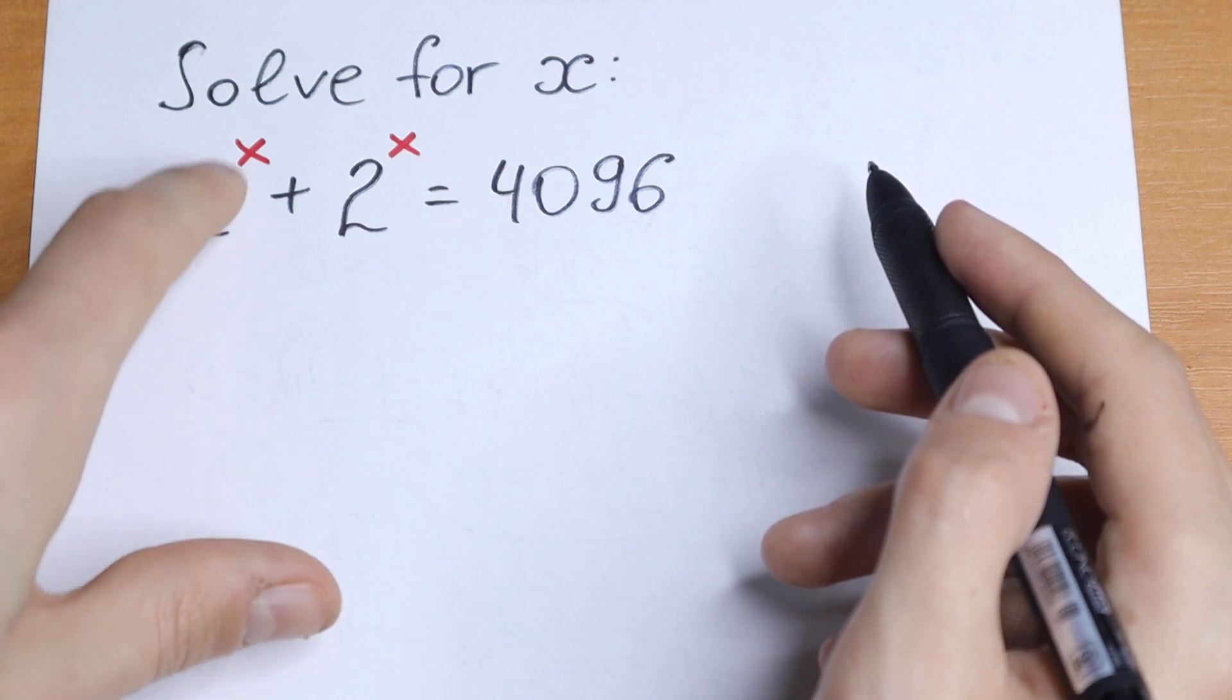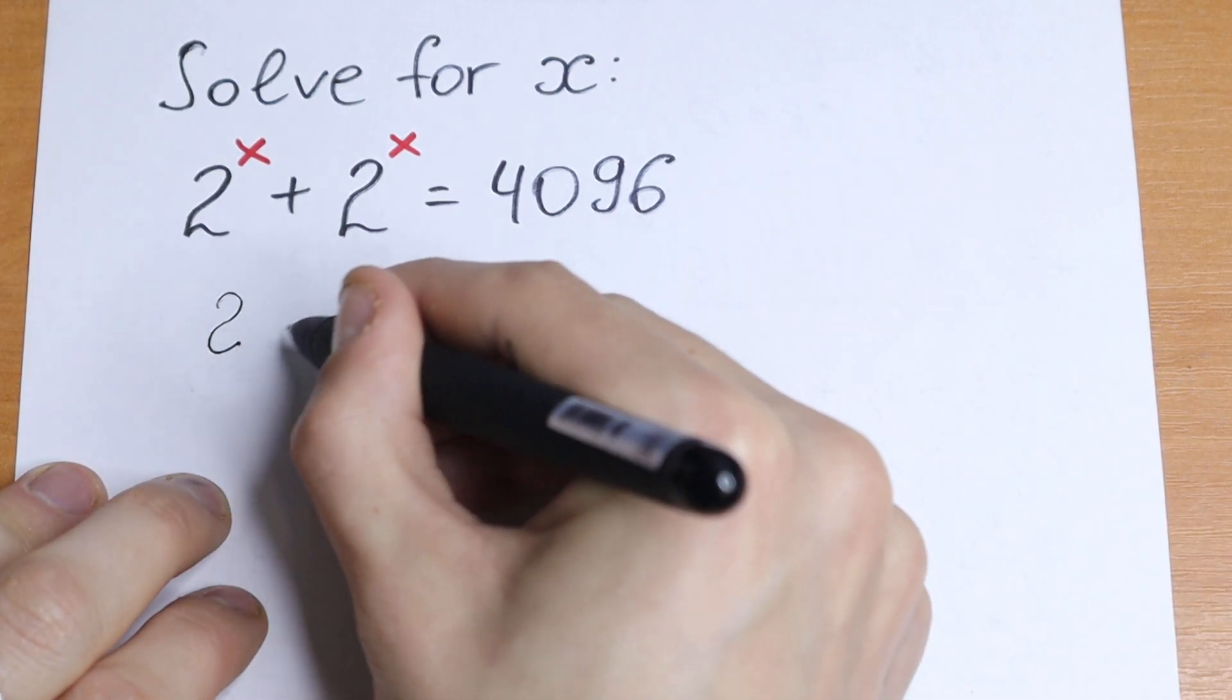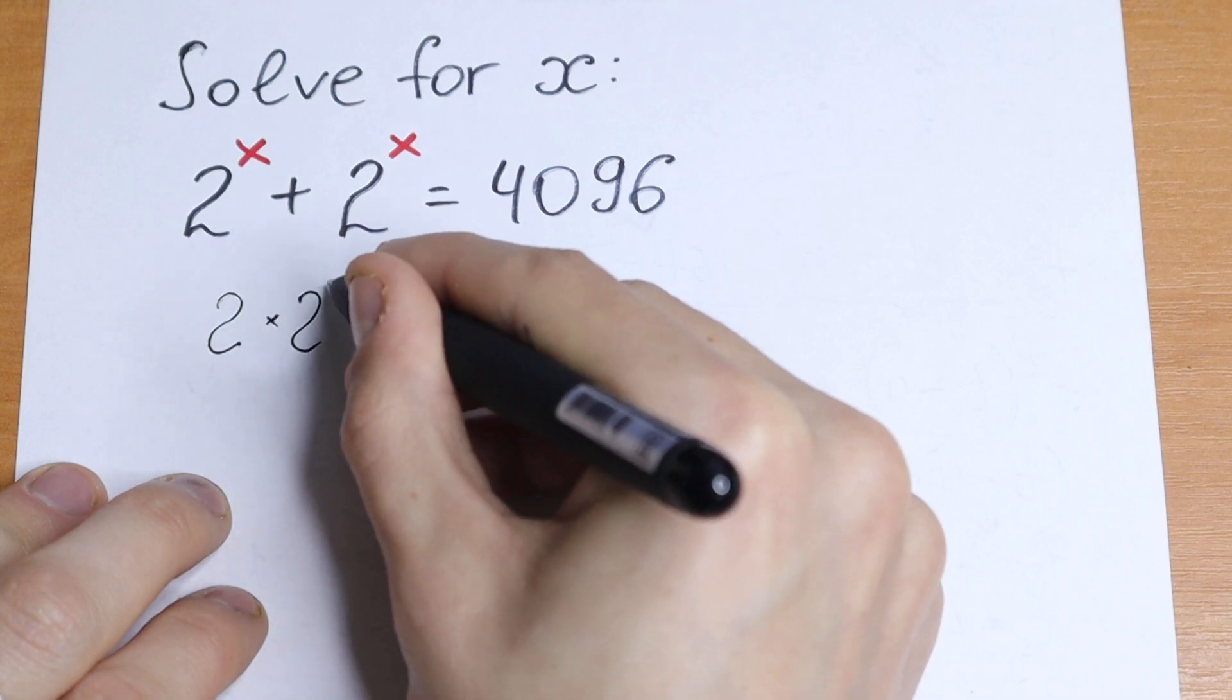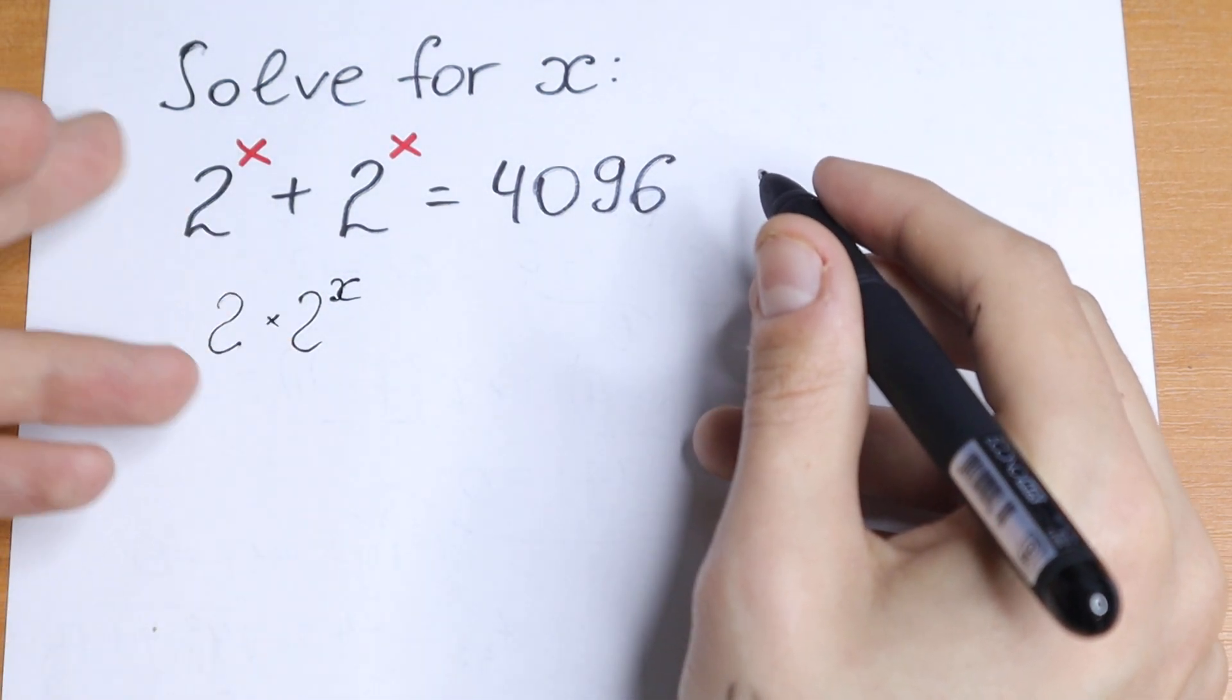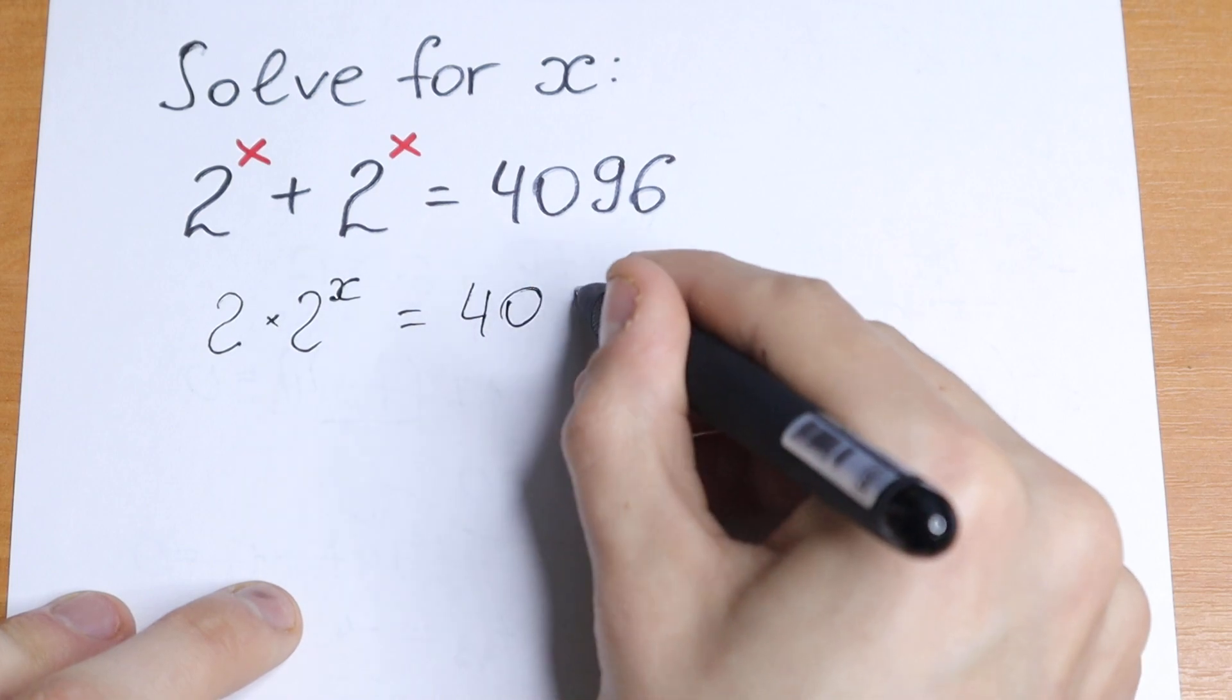But instead of this x we have 2 to the power x, so we can easily write it as 2 times 2 to the power x, which equals 4096.